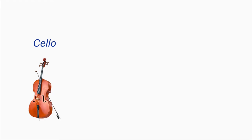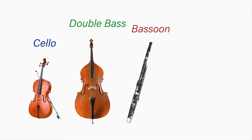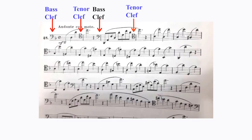The tenor clef is occasionally used by the cello and double bass, which are members of the string family; the bassoon, which is a member of the woodwind family; and the trombone, which is a member of the brass family. In the music shown, the bassoon piece shifts from bass clef to tenor clef because the notes got really high, then shifts again to bass when the notes are lower, and then shifts again to tenor when the notes went up again. This is done because there would have been too many ledger lines if the clef sign was not changed.